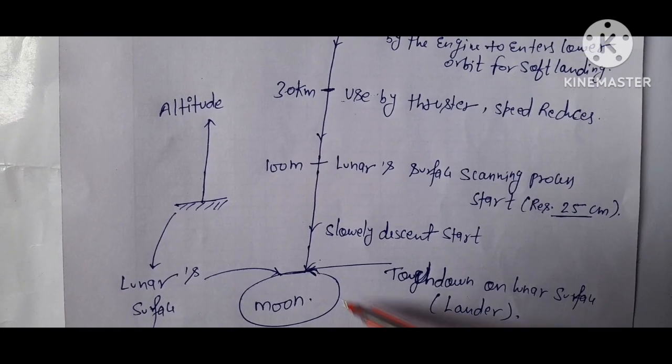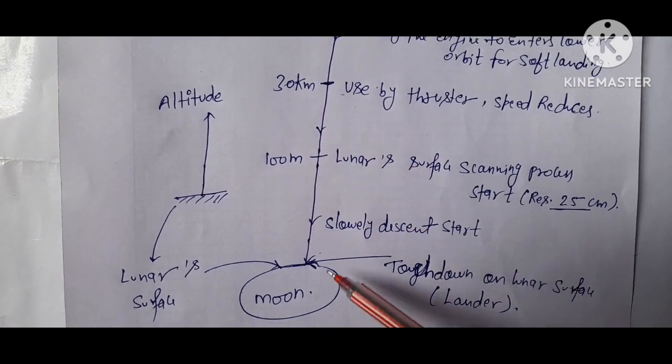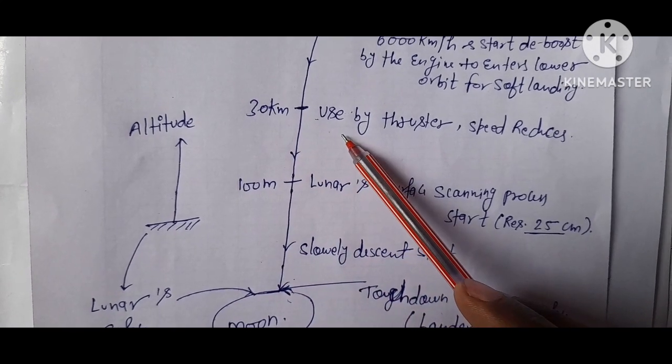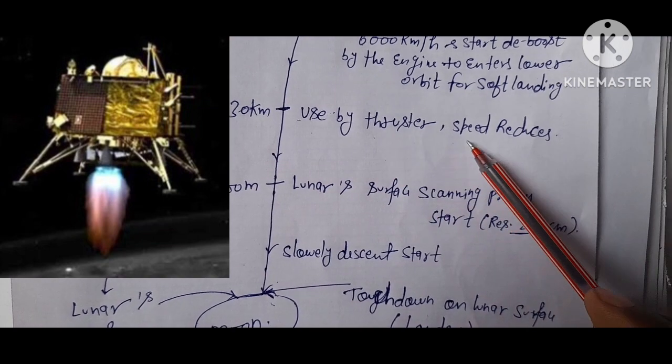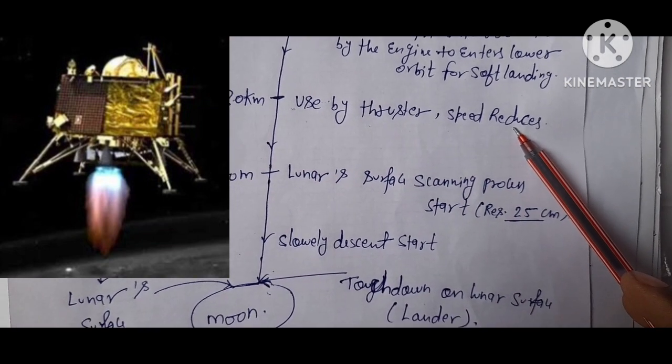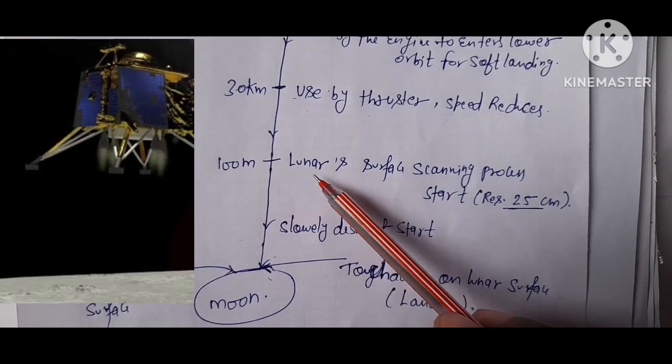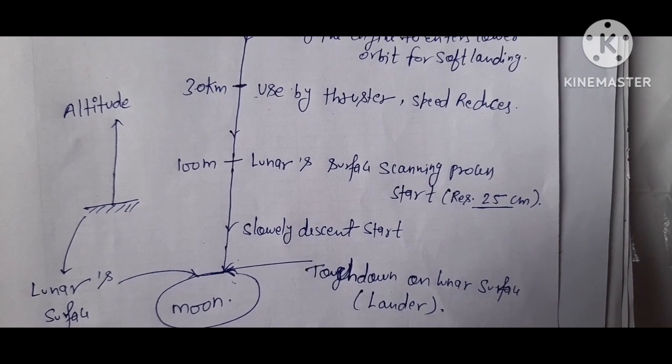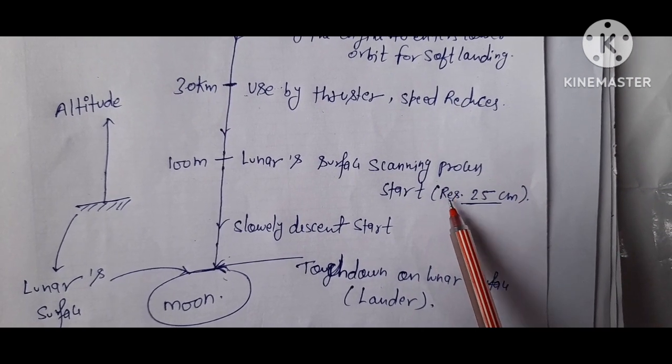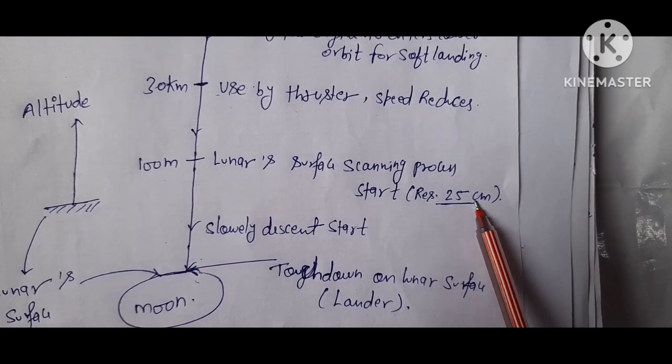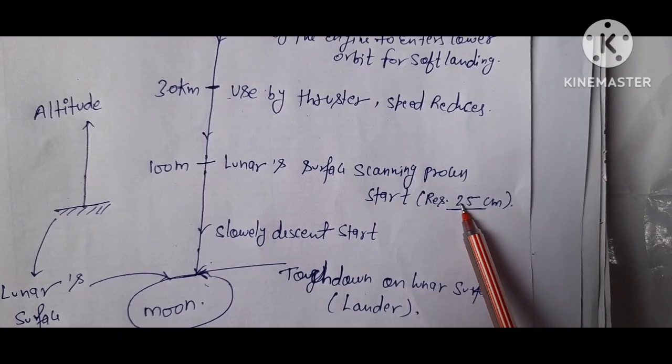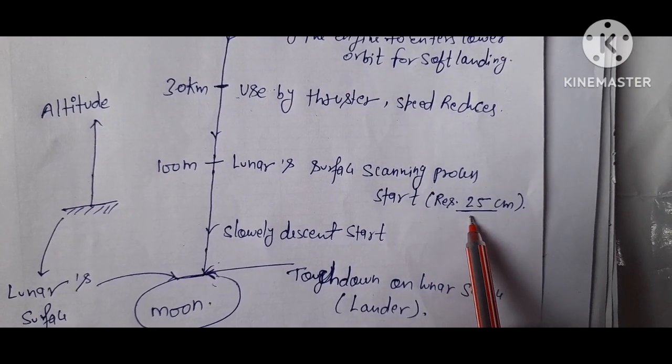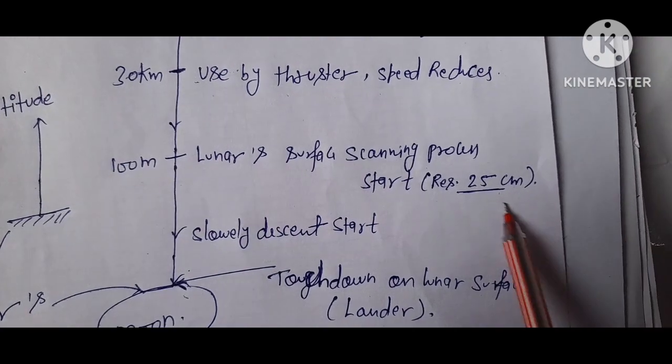After reaching 30 km from the moon surface, the thruster reduces the lander's speed. Around 100 meters from the lunar surface, the attached camera on the lander screens the surface. The camera has a resolution of 25 centimeters.